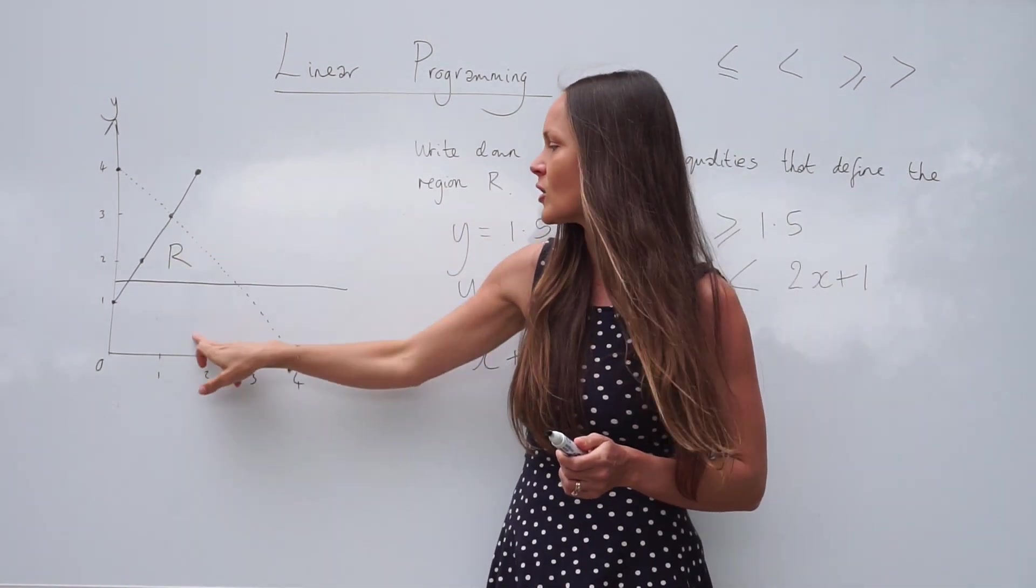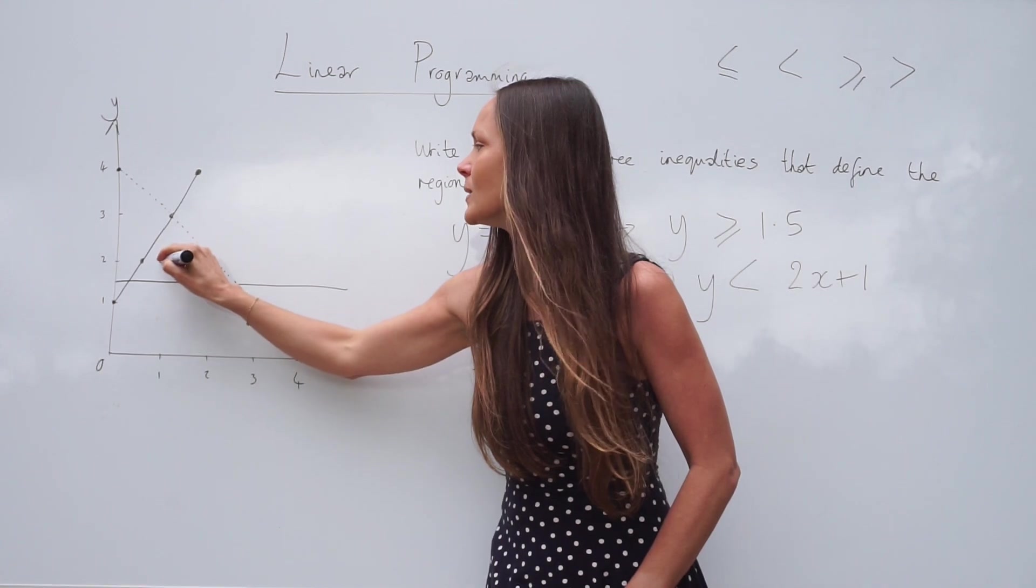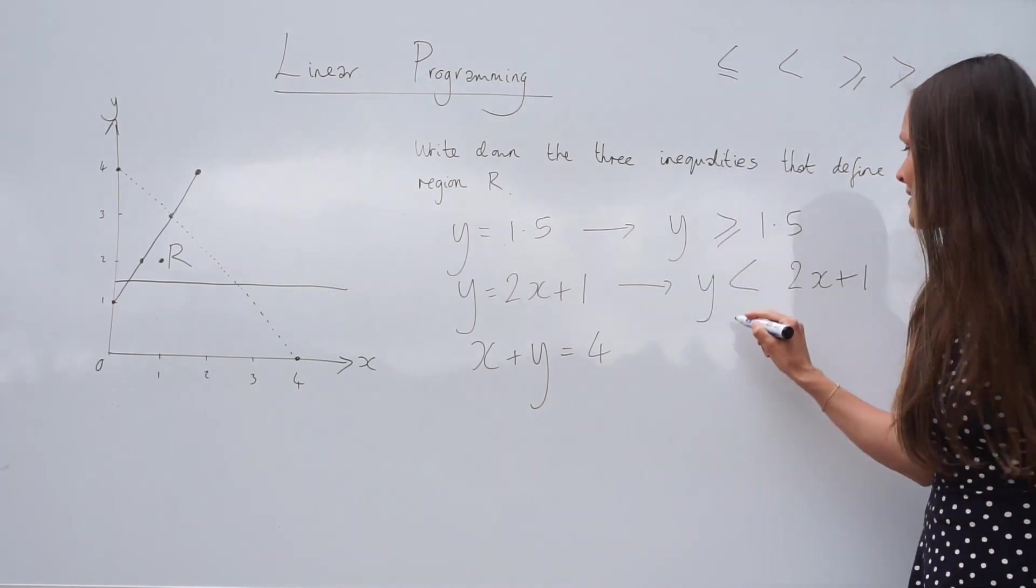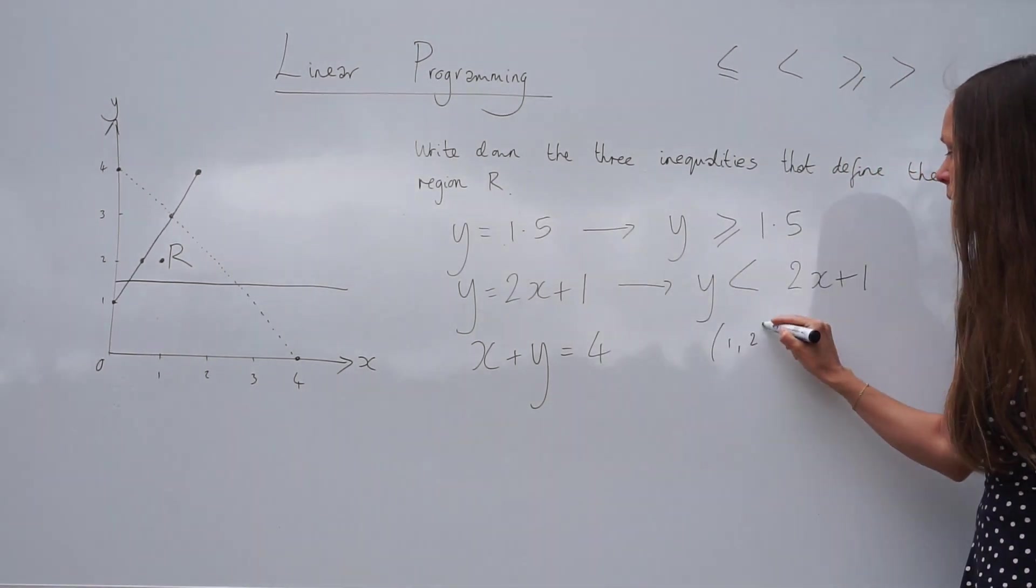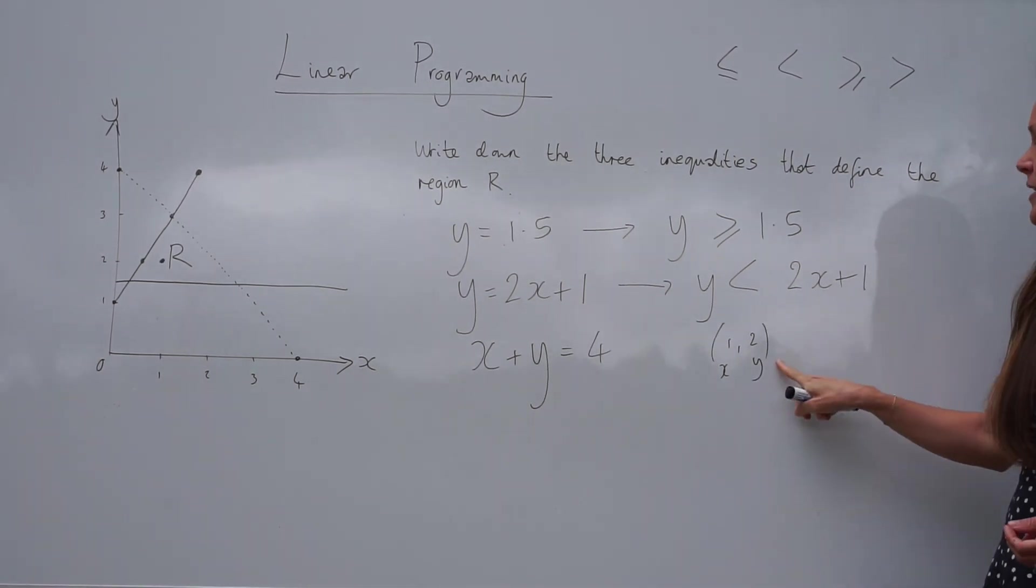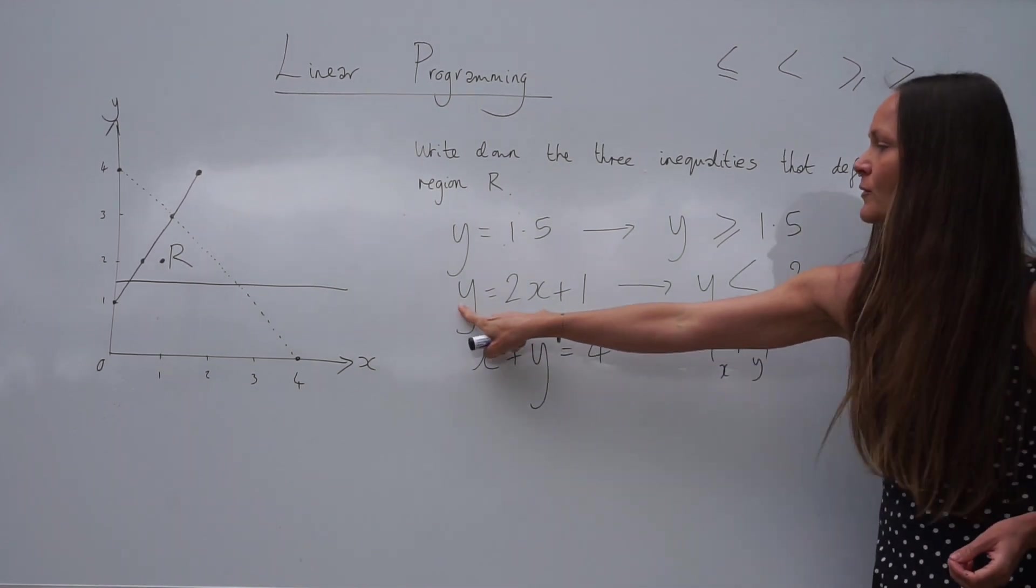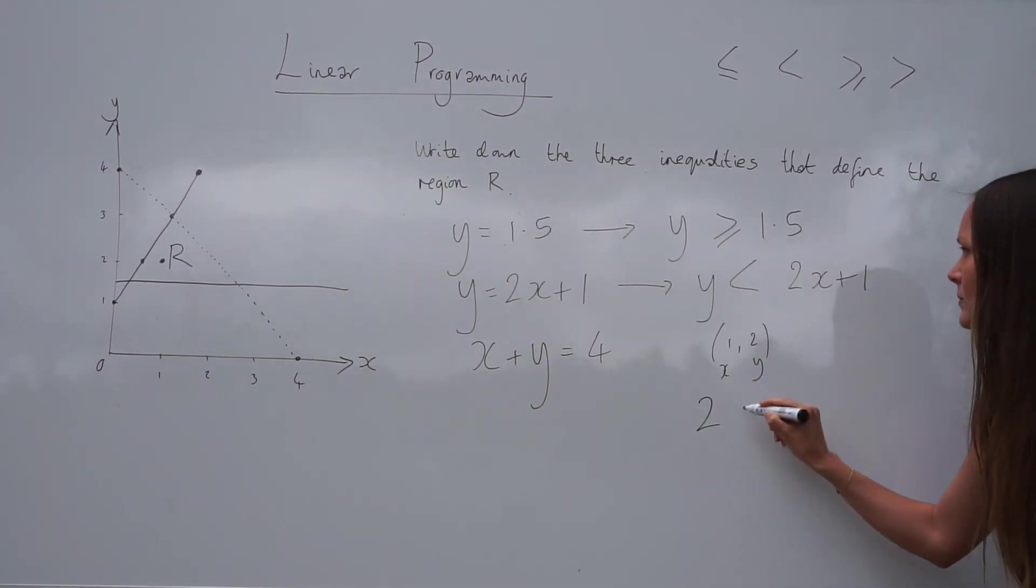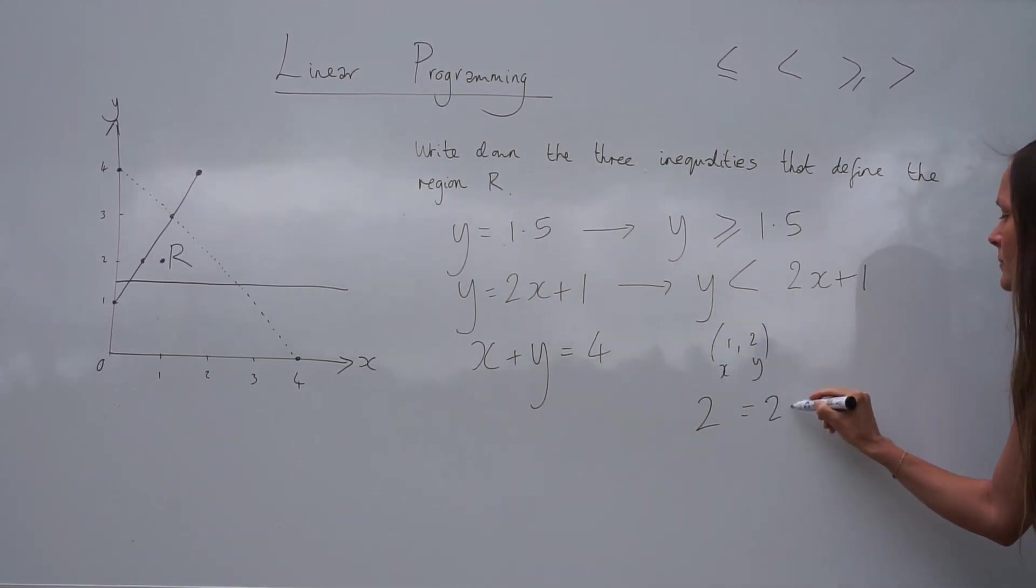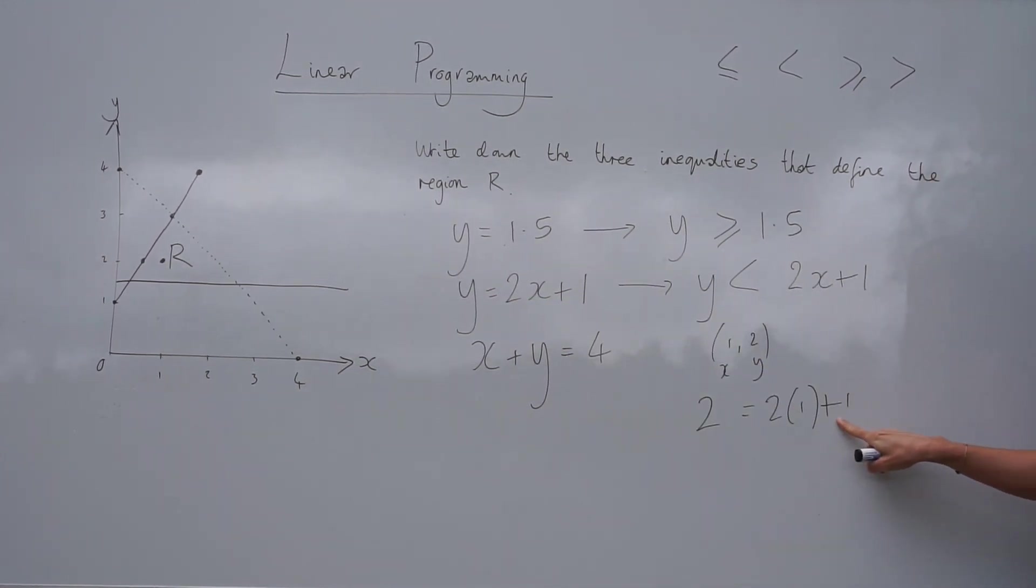It doesn't have to be in this region. It could be down here. Any point you like. I'm going to choose this point here within the region. So the coordinates of that point are 1, 2. So the x value is 1 and the y value is 2. Next, you need to substitute those values into your equation here. So you just change the y value to the number 2 and the x value to the number 1. But everything else stays the same in the equation. You've still got plus 1 at the end.